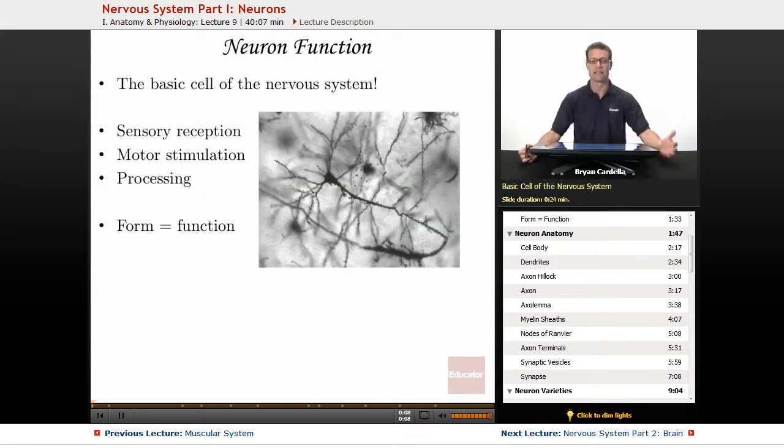Neurons are the basic cell of the nervous system. Your brain alone has a hundred billion neurons, and then besides the brain, you've got the spinal cord and all the other nerves. So you've got billions and billions of neurons in your body.